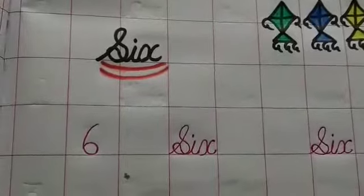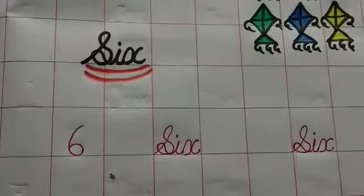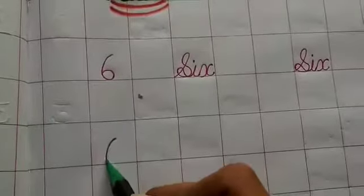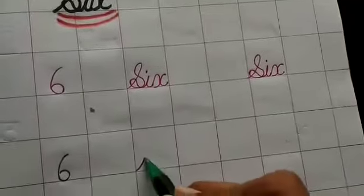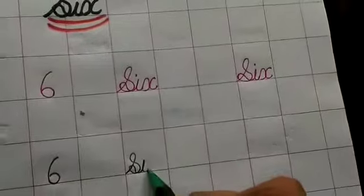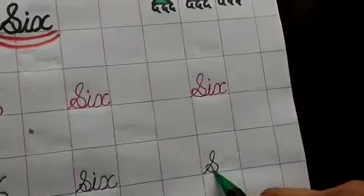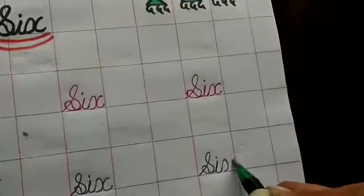So now let's start how to write and learn number name 6. Look at here. Number 6 and number name S-I-X. 6, S-I-X. S, I, X. Look at here, students.